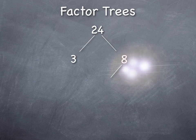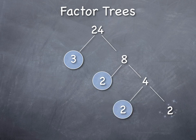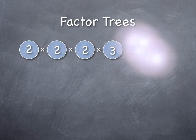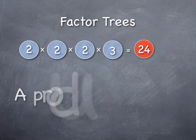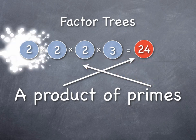3 is a prime number, but 8 is not. I can think of 8 as being 2 times 4, and 4 is 2 times 2. So, I take those same numbers, I've identified the prime numbers there, I rearrange them, and I get 2 times 2 times 2 times 3, which is equal to 24.